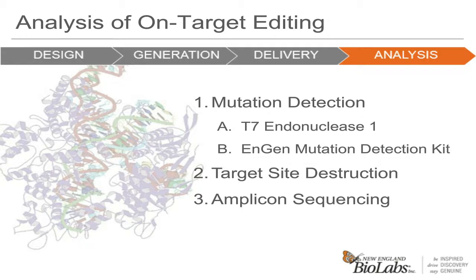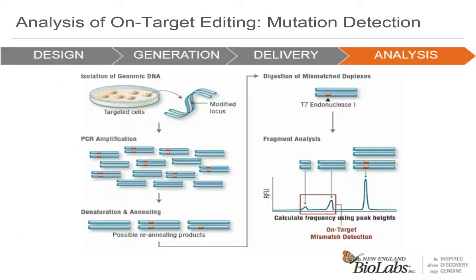The most used methods to detect editing efficiency have been based on mismatch detection enzymes such as Surveyor, the CEL1 nuclease, and T7 endonuclease 1, the heteroduplex resolving enzyme. We begin by isolating genomic DNA from our experiments, followed by PCR to amplify a region surrounding the target locus. We recommend an amplicon of approximately 500 base pairs for the PCR reaction. It is important to design the amplicons such that the cut site is off-center, allowing for discernible bands on a gel or fragment analyzer.